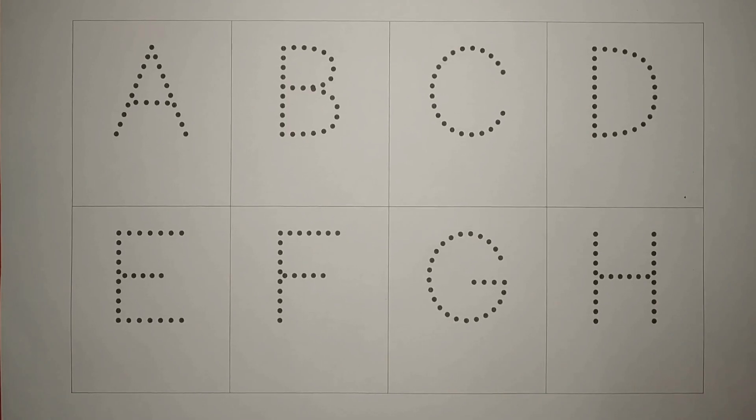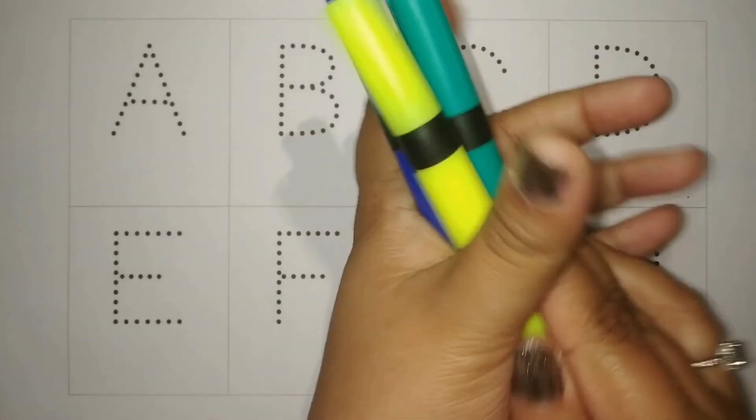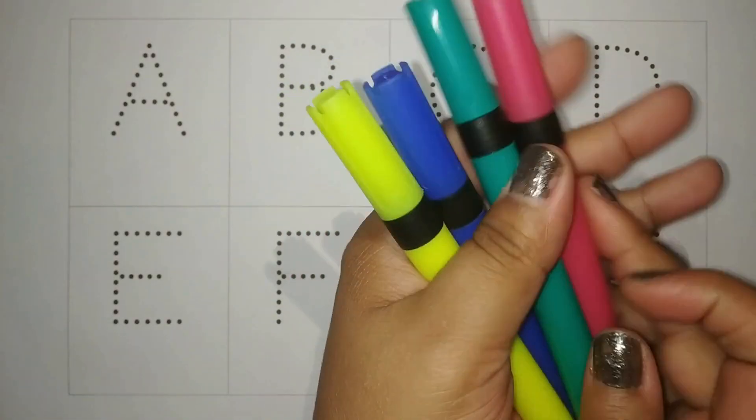Hi kids, hello bachos, welcome to our channel. Today, let's learn alphabets A to H and also learn some colors. Aow, chalo, alphabets or colors, seekh le hai.